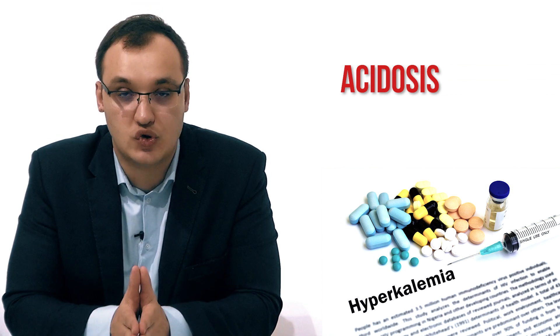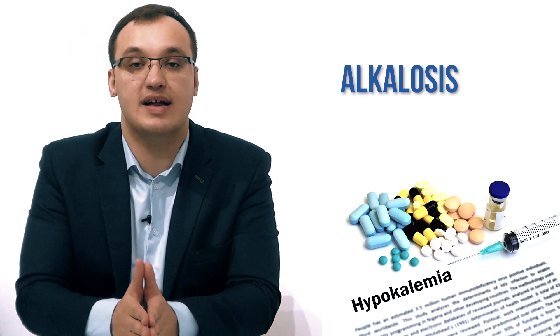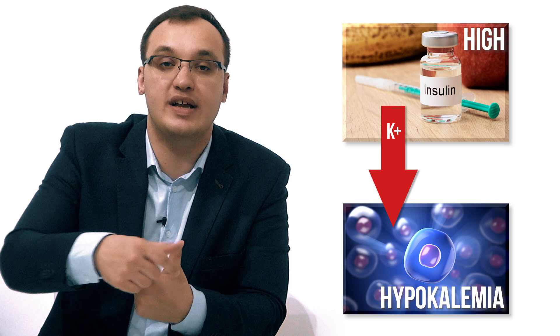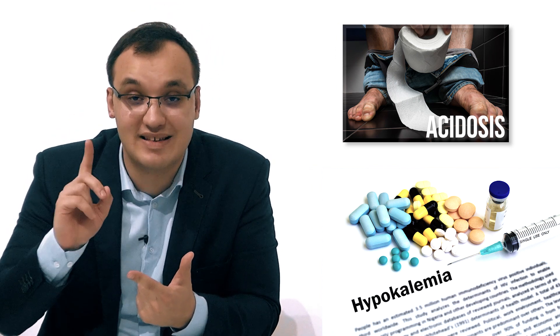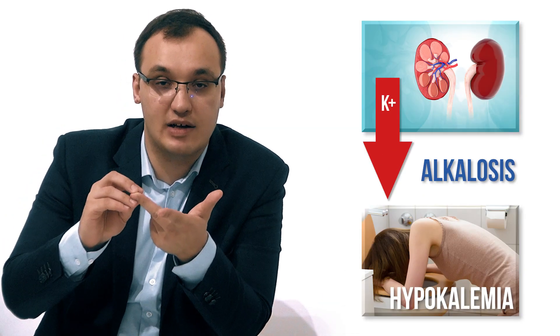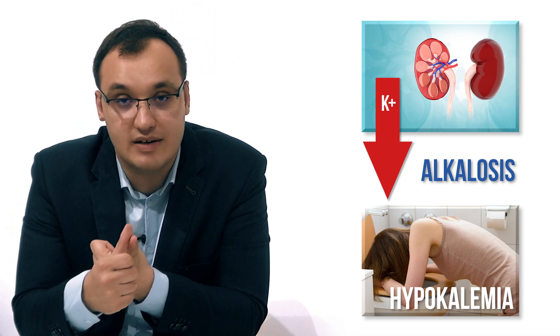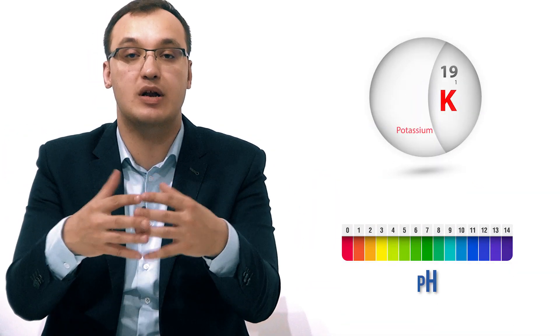To conclude: as a general rule, when you have acidosis you will have hyperkalemia, and when you have alkalosis you will have hypokalemia. The exceptions include increased insulin causing hypokalemia, and diarrhea causing hypokalemia together with acidosis instead of alkalosis. Then we had the four examples of metabolic alkalosis: vomiting with increased renal excretion of potassium, diuretic use, Bartter syndrome, and Gitelman syndrome. That is the relationship between potassium and acid-base disturbances. Thank you very much for listening.